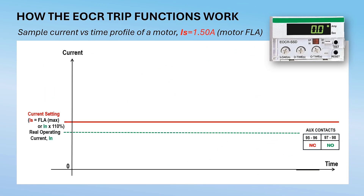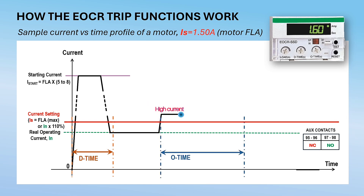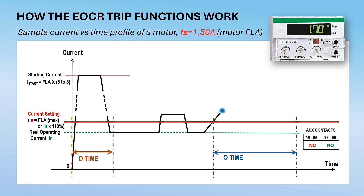How the EOCR trip functions work: on every start, the D-time also starts counting. The relay senses five to eight times the motor rated full load current. The EOCR will not trip if the starting current goes below 200 percent before the D-time elapses. After the starting period, the motor goes to normal current level. When the current suddenly goes above the load current setting, the O-time starts counting. If the overload is not maintained until the O-time elapses, the EOCR will not trip and the O-time resets to zero. When the motor current goes above the load setting again, the O-time starts counting again. If the overcurrent is maintained up to the end of the O-time setting, the EOCR will trip, auxiliary contacts change from NO to close and NC to open, and a reset is required to normalize the relay.